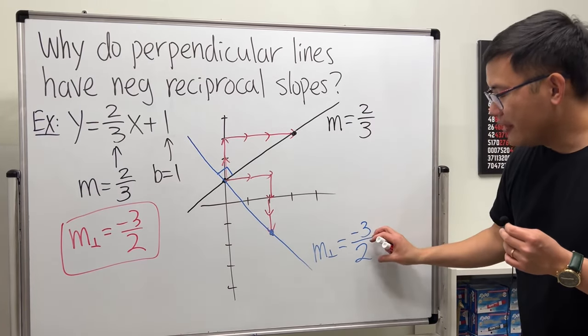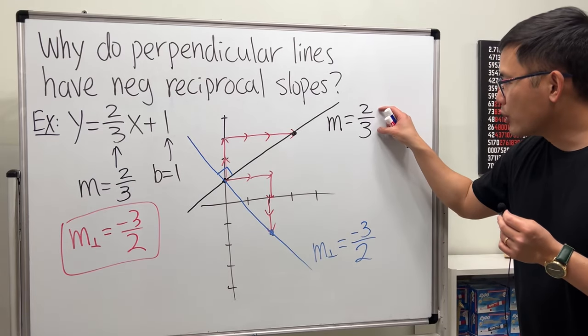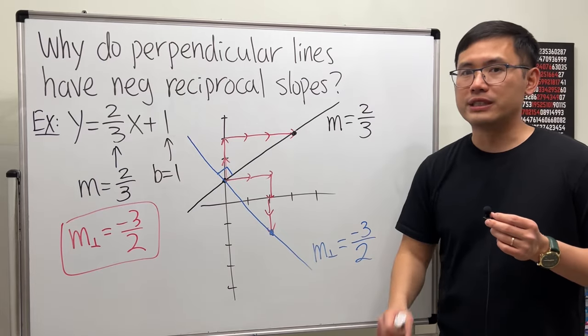So they are negative reciprocals of each other. In another word, if you multiply this and that, you end up with negative 1.